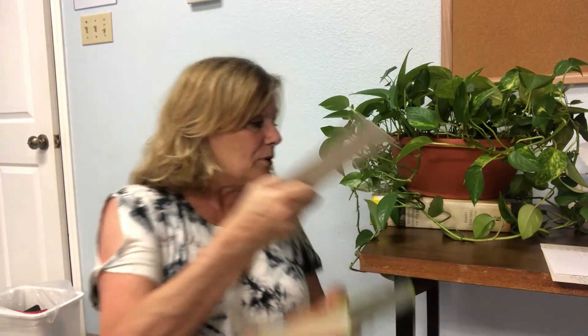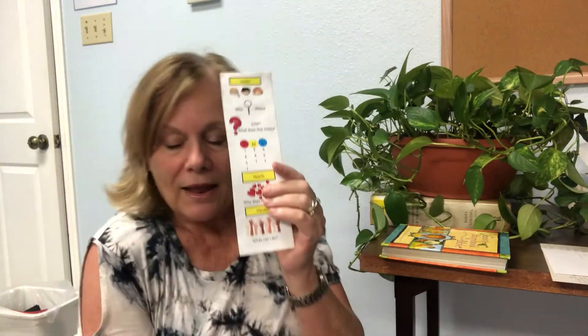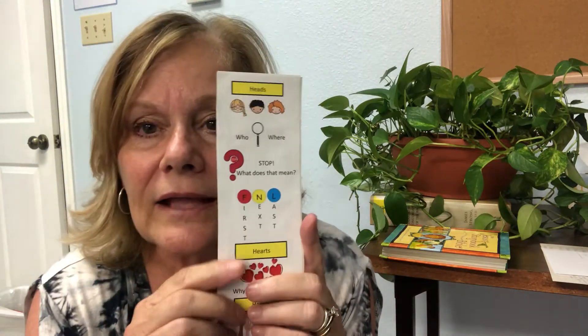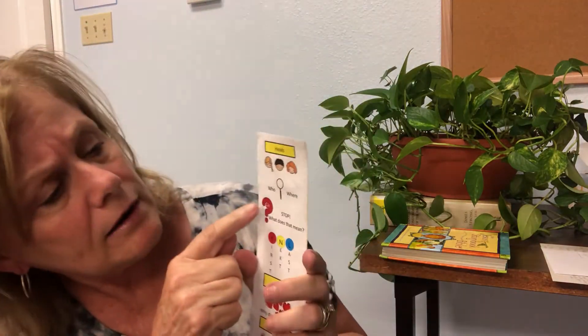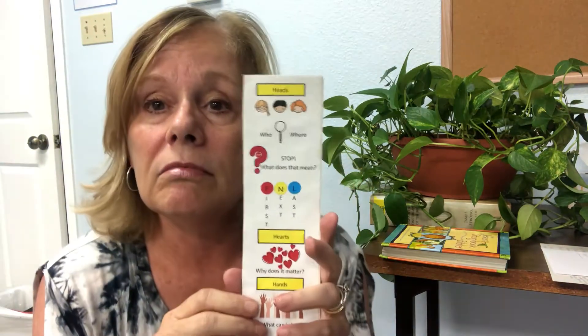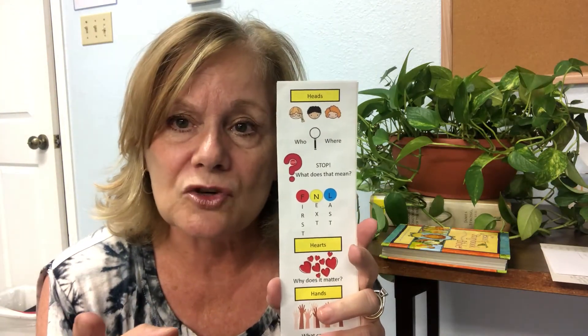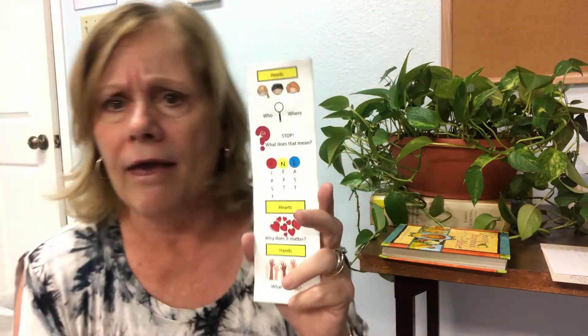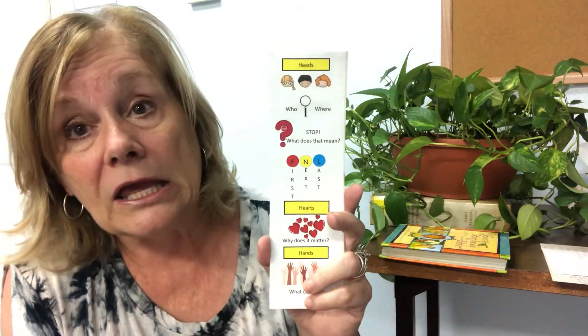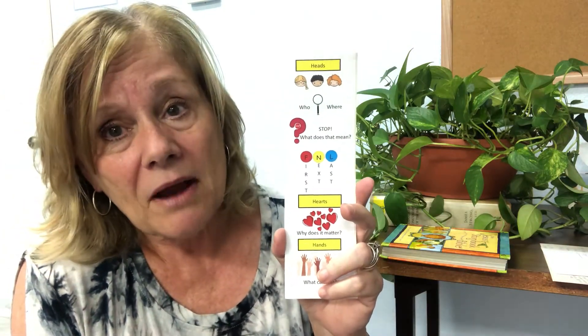Now let's take a look at my bookmark, starting right at the top. Heads — who was in the story? Well, there were Jesus' friends, Jesus of course, and a whole bunch of kids. And where were they? We'd have to read a bit more context to know exactly, but it seems like they were outside somewhere — maybe traveling along and Jesus had been talking to people, spending time with them and healing them. Were there any words you didn't know? Since this was a children's book, it was written so you'd understand most words.